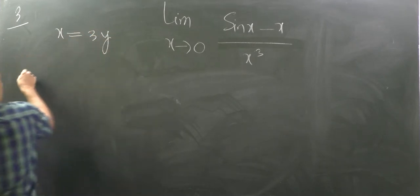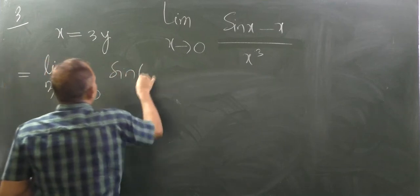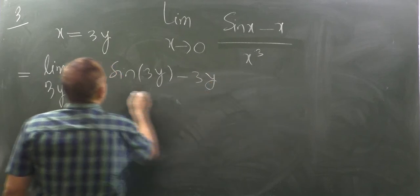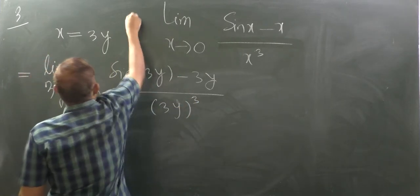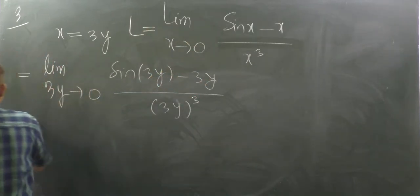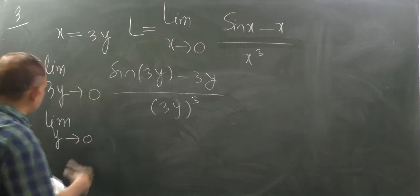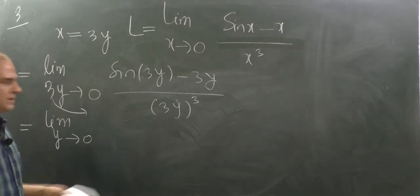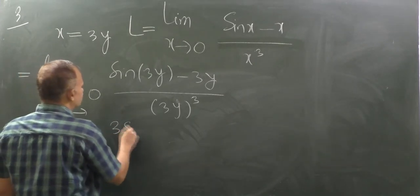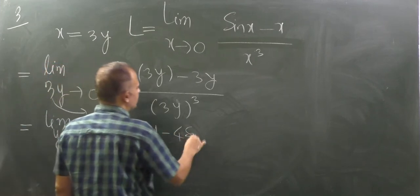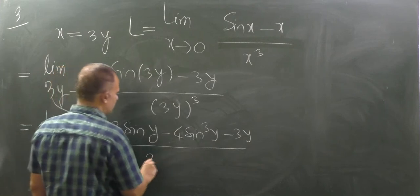For Method 3, we substitute x = 3y in the limit. So the expression becomes: limit as 3y → 0 (equivalently y → 0) of [sin(3y) − 3y] / (3y)³. Let this limit value be L. Now we use the identity sin(3y) = 3 sin y − 4 sin³y. So the numerator becomes 3 sin y − 4 sin³y − 3y, and the denominator becomes 27y³.